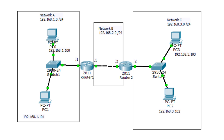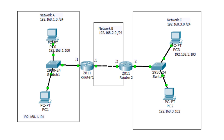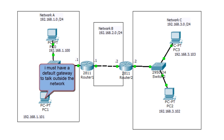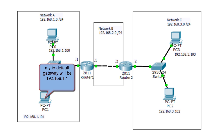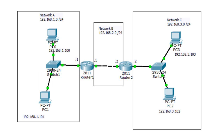Now let's assume PC1 wants to communicate with PC3. Since PC1 and PC3 are not on the same network, PC1 must have what we call a default gateway. The default gateway is the IP address of the router that is on the same network as PC1. So PC1 will have a default gateway of 192.168.1.1, because that's the only router interface on the same network as PC1.